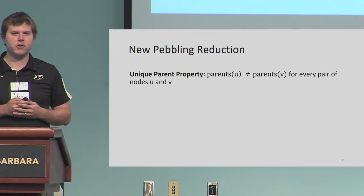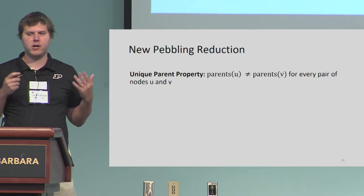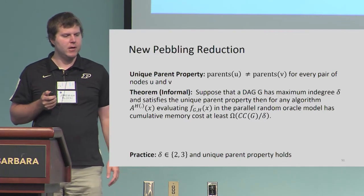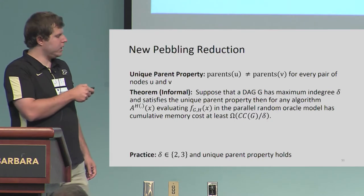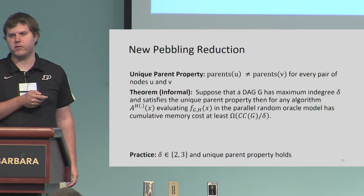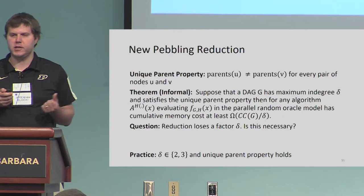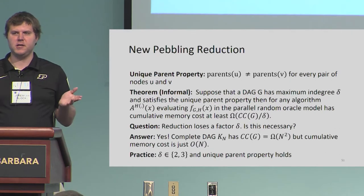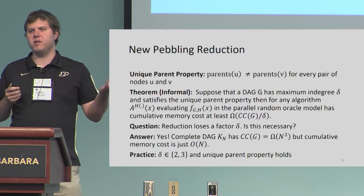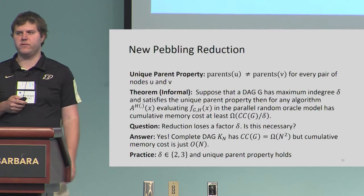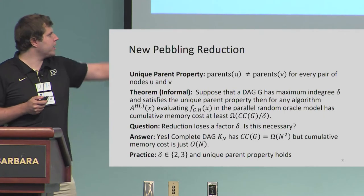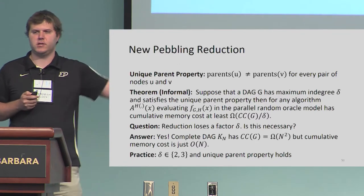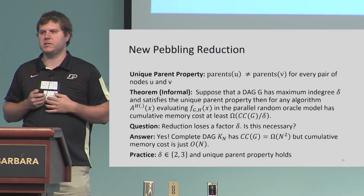What we can show is that if your graph satisfies the unique parent property, the same pebbling reduction goes through — the cost of pebbling the graph equals the cumulative memory complexity of the function. Here we lose a factor of delta, where delta is the maximum in-degree of the graph. Is this loss of delta necessary? It turns out it is: if you take the complete graph, delta is N, the cumulative memory complexity is just N, but the cumulative pebbling complexity is N-squared. So the loss of delta is necessary in the theorem. In practice, delta is a small constant and the unique parent property does hold, so this pebbling reduction covers all the interesting examples we would see in practice.